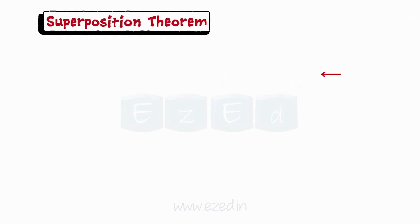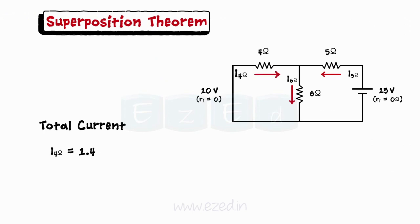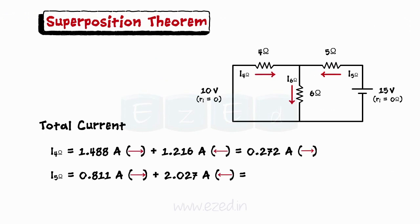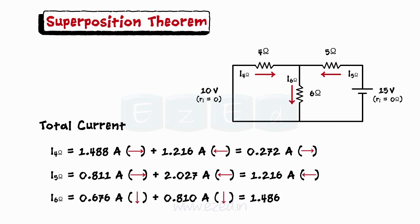The total current now becomes the algebraic sum of the currents obtained in the two cases. Thus, the Superposition Theorem simplifies the network analysis.